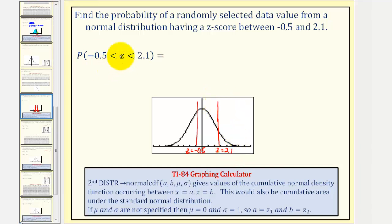This probability would equal the area bounded by these two z-scores. We can quickly determine this area, which is our probability, using the TI-84.